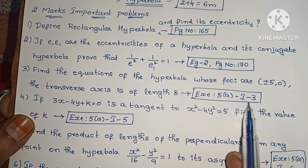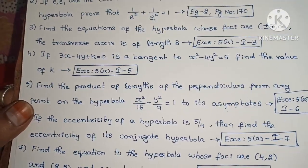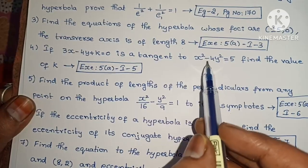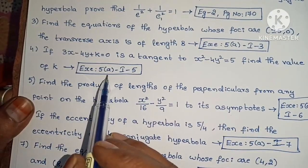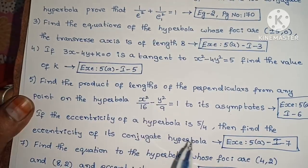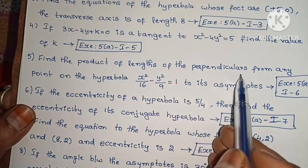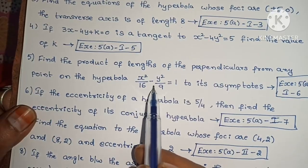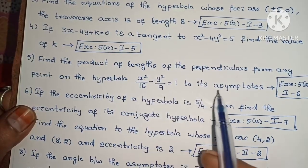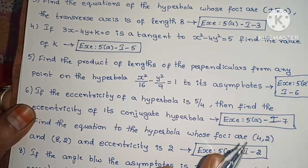Exercise 5(a), Roman numeral I, problem 1. Third one: if 3x − 4y + k = 0 is a tangent to x² − 4y² = 5, find the value of k. Exercise 5(a), Roman numeral I, problem 5. Next, find the product of the lengths of the perpendiculars from any point on the hyperbola x²/16 − y²/9 = 1 to its asymptotes. Exercise 5(a), Roman numeral I, problem 6.